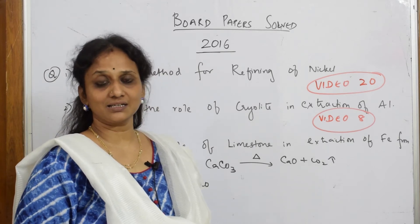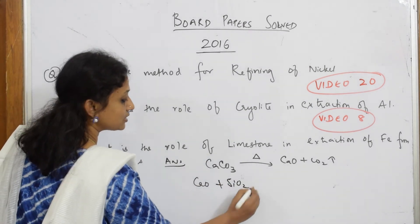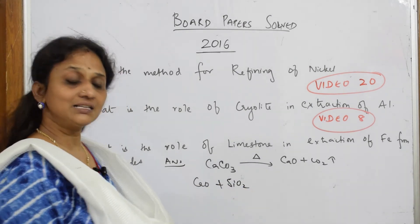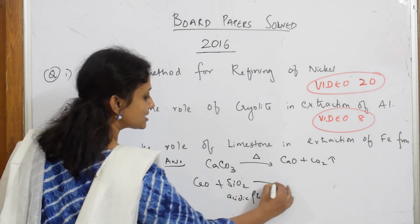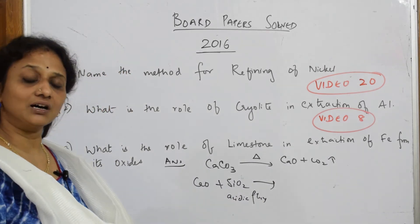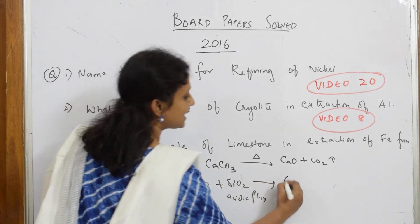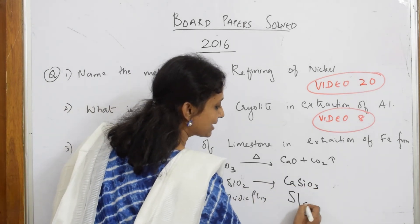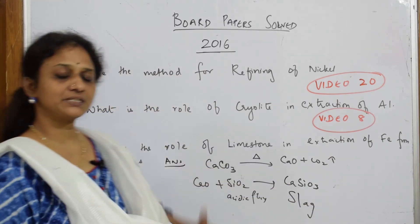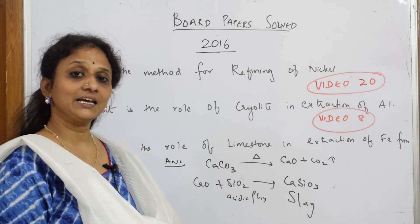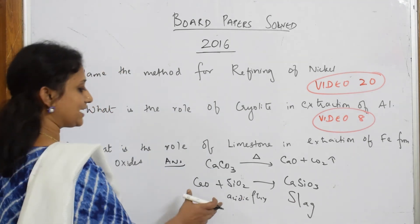Now this calcium oxide — in the metallurgy of iron you have different impurities. Silica (SiO₂) is one of the major impurities, that is sand. This calcium oxide is going to combine with silica. Silica is an acidic flux. These combine together and form CaSiO₃ — calcium silicate. This is called slag, which can be easily removed from the process.